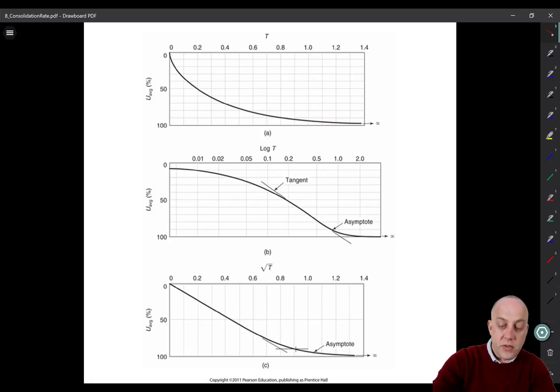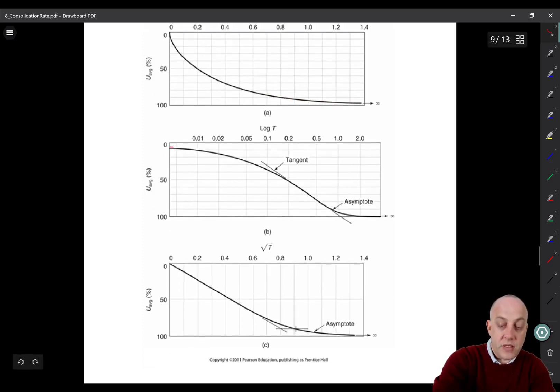We'll use two different methods. One of them uses the logarithm of time, a double curvature kind of shape. The other one uses the square root of time where you get this initial linear portion right at the beginning.